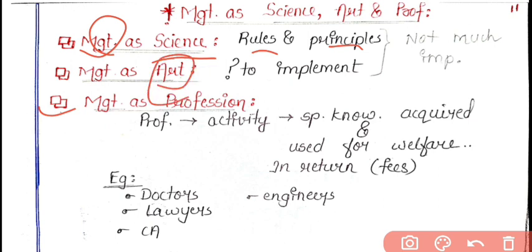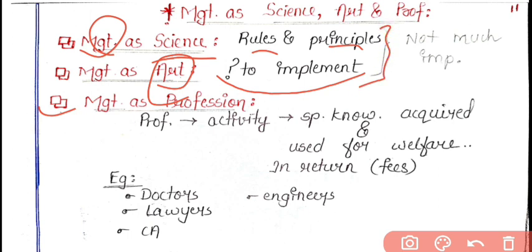Second, management as an art. Art means how to do any work in a particular way. Management is also an art because it is said that management is the art of getting things done through others — you get work done through other people. That is why management is termed as an art. These two headings are not as important as the next one.